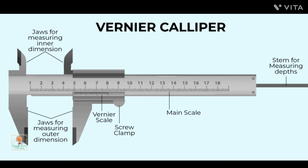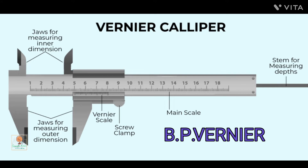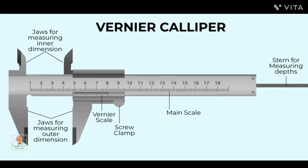The Vernier scale is a device formulated by P. Vernier, by which even the fractional part of the smallest divisions of the main scale can be measured with high precision. It consists of a small auxiliary scale called the Vernier, which moves freely along a long fixed scale called the main or primary scale.